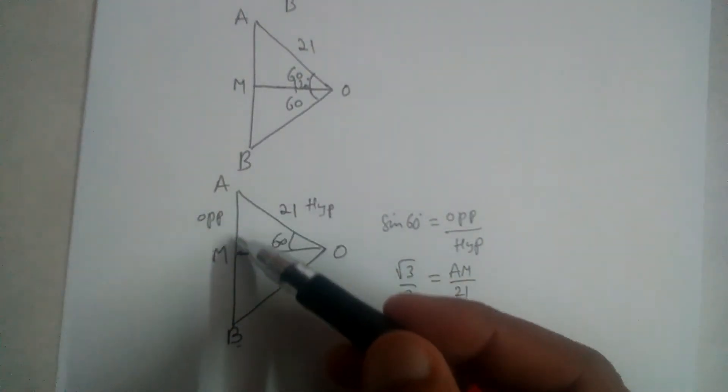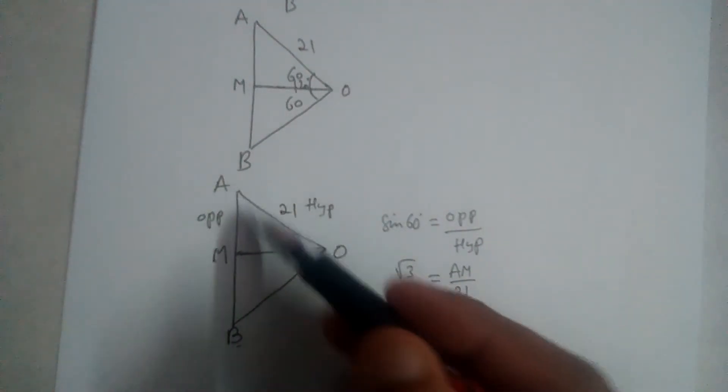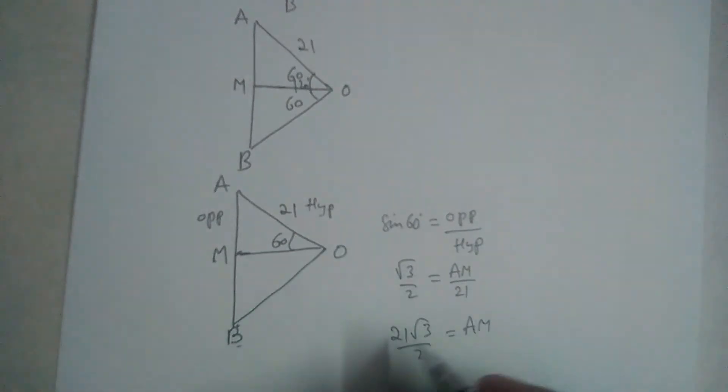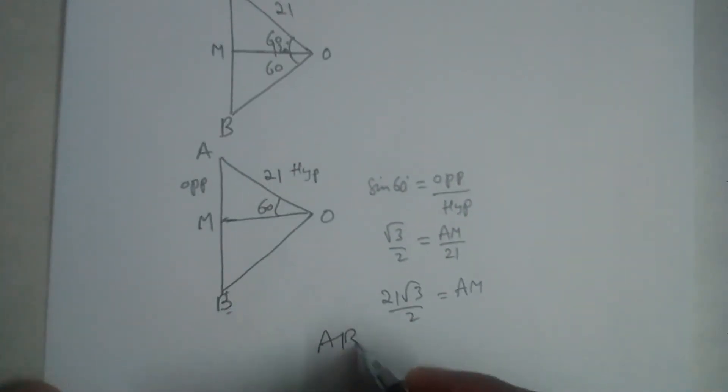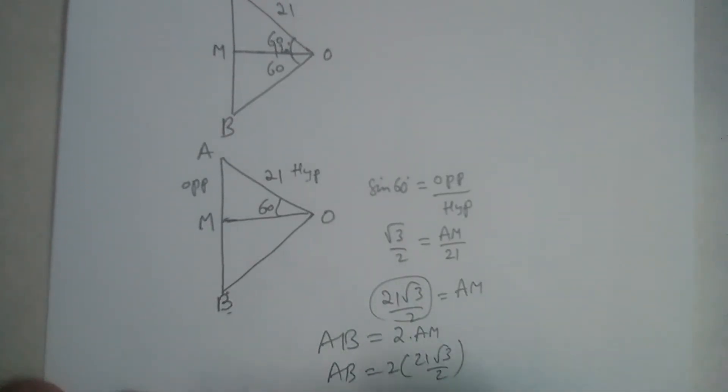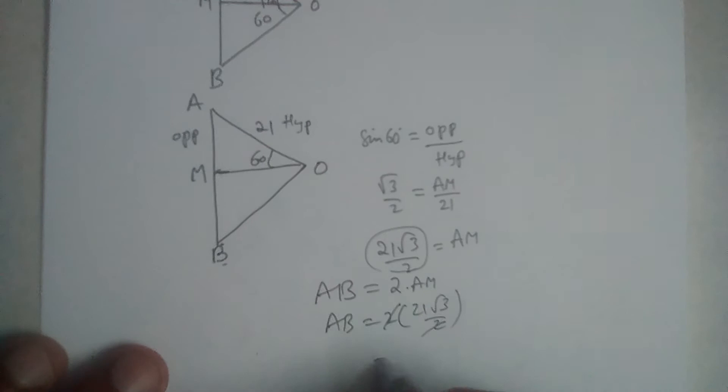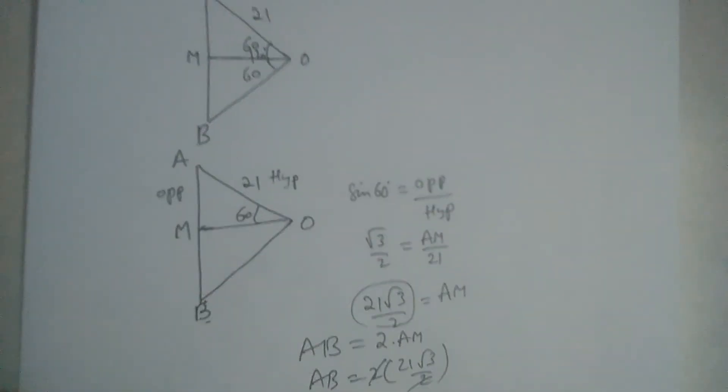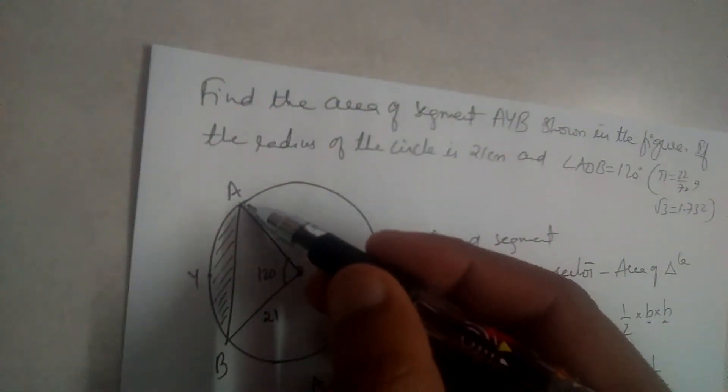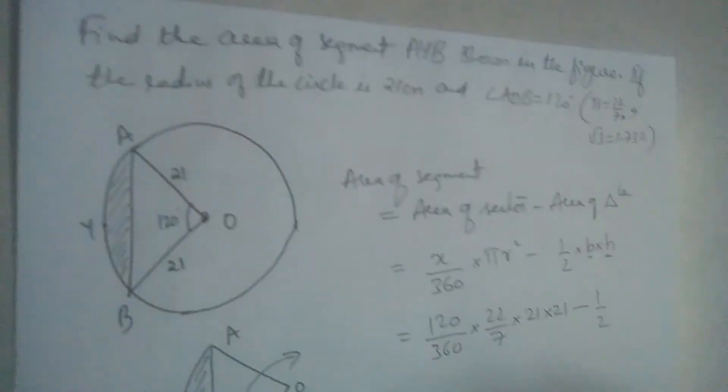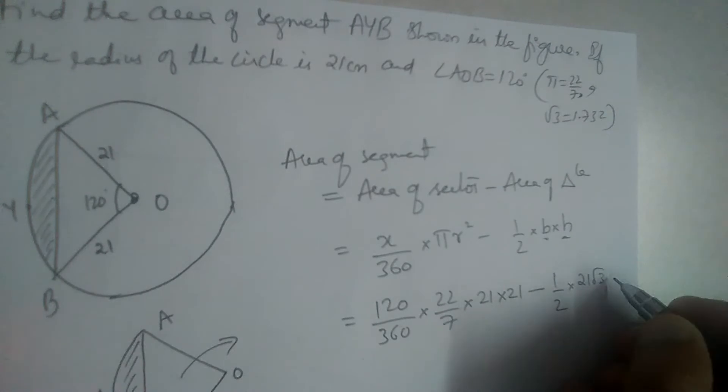But base of the triangle is AB, from here to here. What is AB? AB is twice of AM. So AB is equal to 2 times, what is AM, 21 root 3 by 2. This 2, this 2 will get cancelled, 21 root 3 will be AB. So that means base of this triangle is 21 root 3.